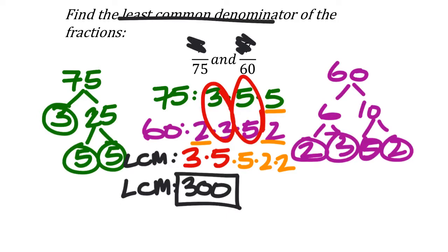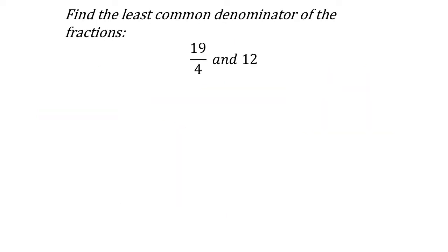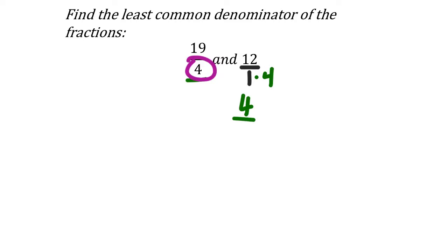Now try the next problem — take 30 seconds. This one is straightforward once you realize that 12 as a fraction is 12 over 1. By the identity property for multiplication, multiplying 1 by 4 easily gives a common denominator of 4. The denominator 1 doesn't need to change — any number is already a multiple of 1. So the lowest common denominator here is 4.